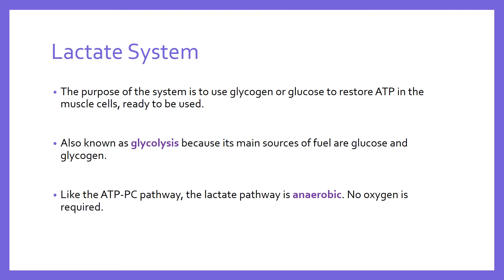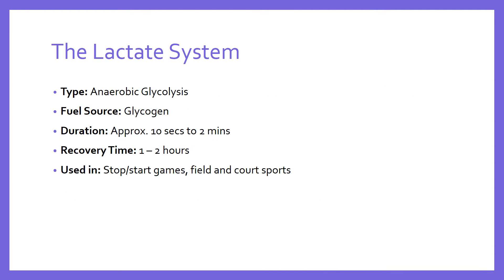To summarize the system before we get into how it specifically works: the system type is anaerobic glycolysis — that is, it's breaking down glucose without oxygen. The fuel source is glycogen and glucose. Glycogen is simply the stored form of glucose.